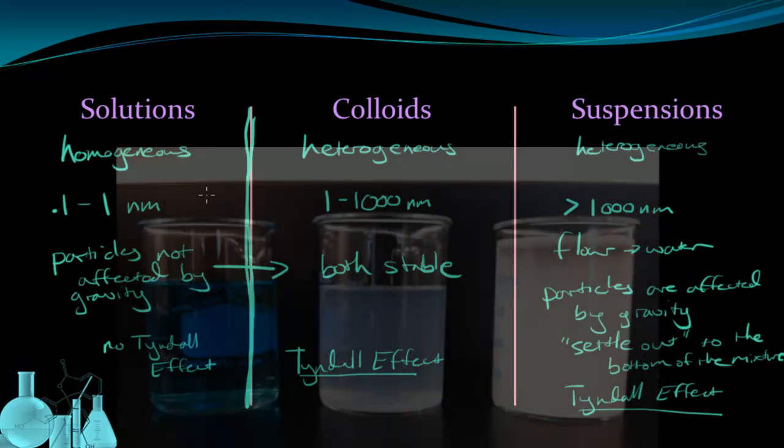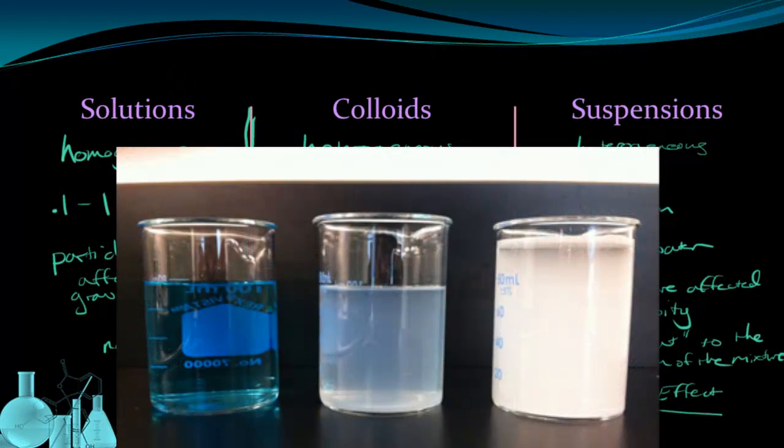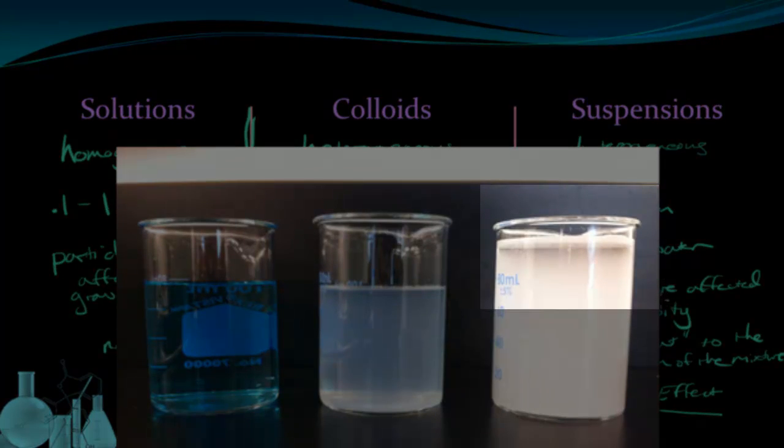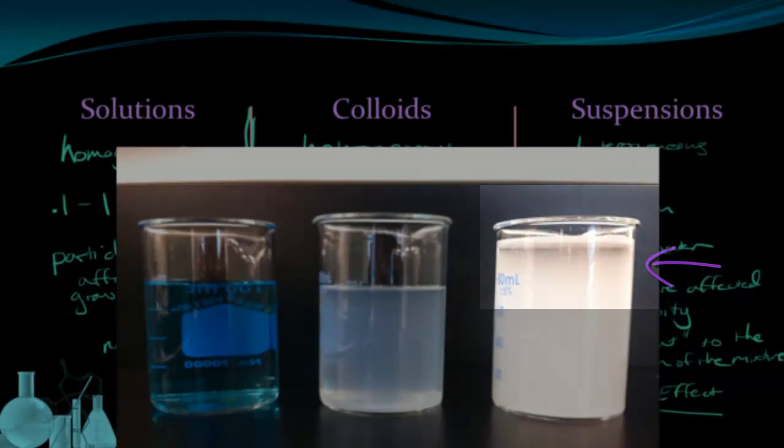If we look back at the original picture of the solution colloid and suspension, you can also start to see the separation occurring with the suspension. This particular suspension is a mixture of starch and water. And as you can see, near the top of the mixture, the starch has already started separating away and being dragged down towards the bottom of the container.